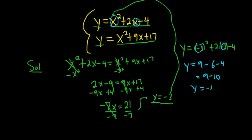So when x is negative 3, our y value is negative 1. The answer is negative 3 comma negative 1.